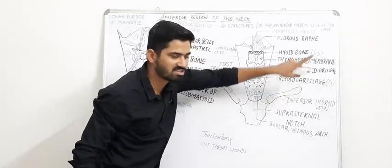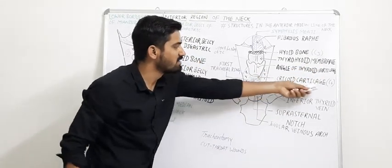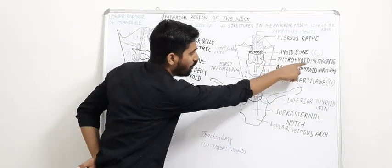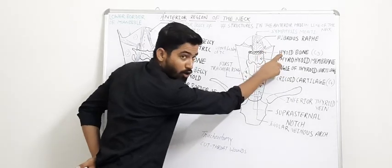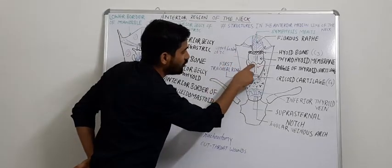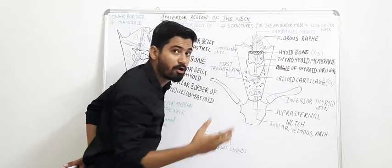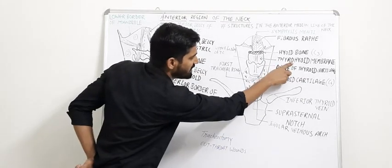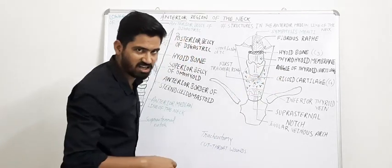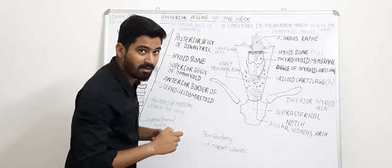The trachea starts from C6 vertebra — this is very important to know. Above the thyroid cartilage, between the hyoid bone and the thyroid cartilage, there is a membrane called the thyrohyoid membrane. The angle of the thyroid cartilage is prominent in the adult male and is called the Adam's apple.